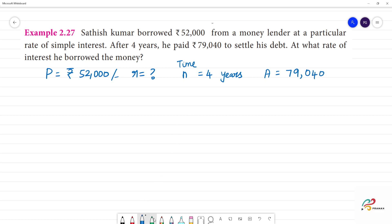Now, we have the amount is equal to principal plus interest. Amount is 79,040, which is equal to principal amount of Rs. 52,000 plus interest. Now, interest is equal to Rs. 79,040 minus Rs. 52,000.